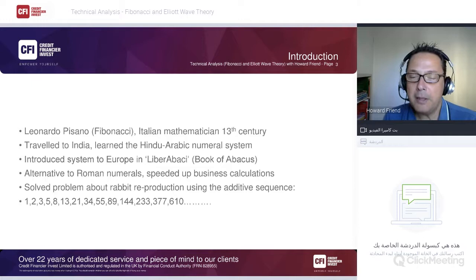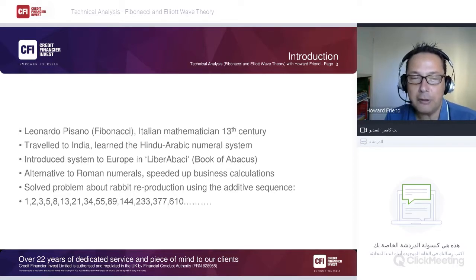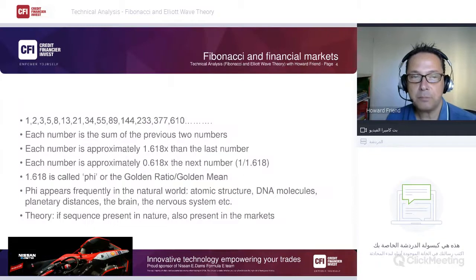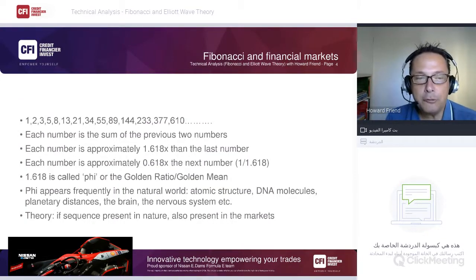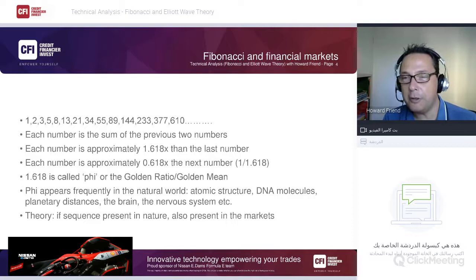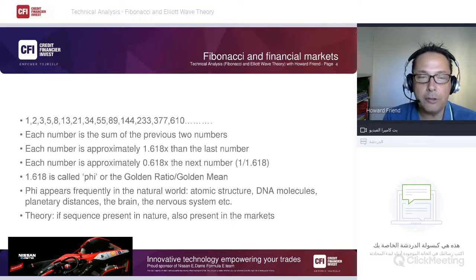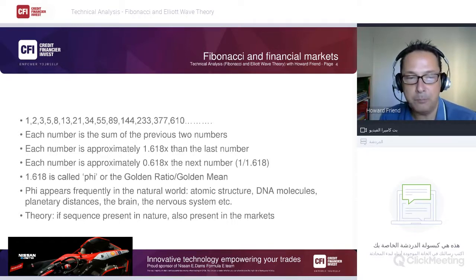The sequence represents a growth spiral where each number is added to the prior one to produce the next. The ratios derived from adjacent numbers are key: each number is approximately 1.618 times the last, and approximately 0.618 times the next. 1.618 is called phi, the golden ratio or golden mean.